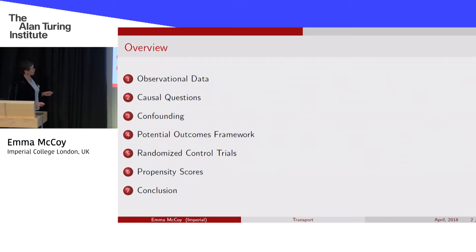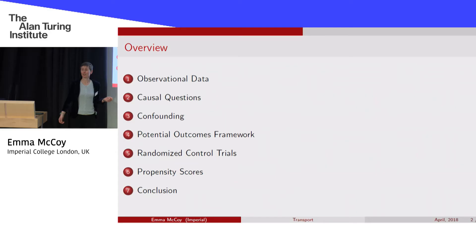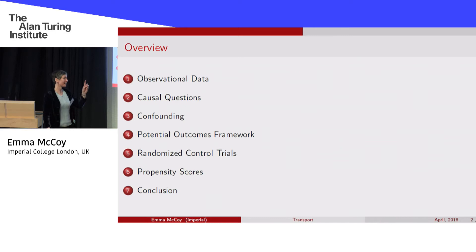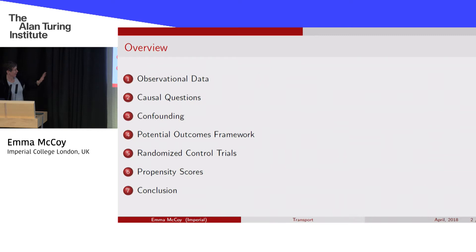I want to talk about how we tackle causal inference when we have this mass of observational data. The major issue — and let me check: how many here are statisticians? Mathematicians? Computer scientists? We have journalists, operational research, engineering. I'll talk about engineering later. I'm going to plug the idea of propensity scores as a methodology, and I'm particularly interested in transport, which I talk about a lot in my undergraduate teaching.